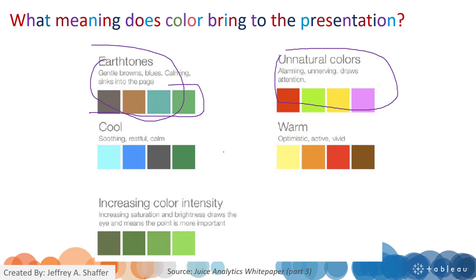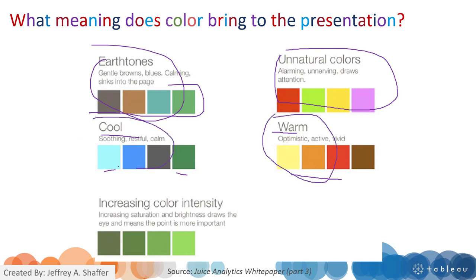We have cool colors like blue and green, and we also have warm colors like yellow and red. Warm colors can be used for warnings and highlights.